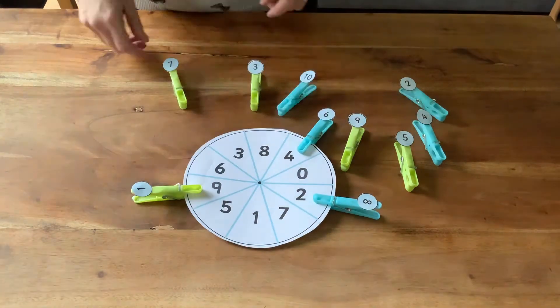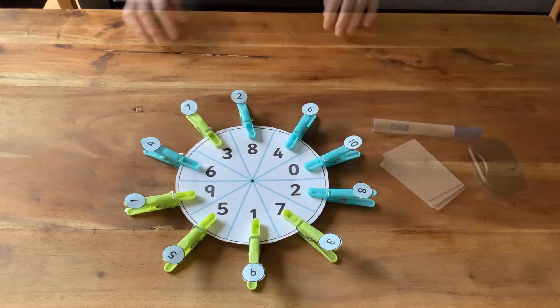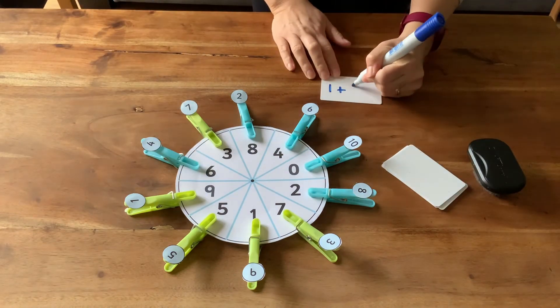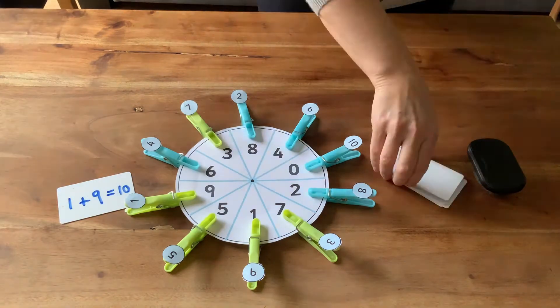Now can they peg all the other pairs of numbers that make 10? Children could write number sentences to match the pegged pairs. 1 pairs with 9. 1 add 9 equals 10.